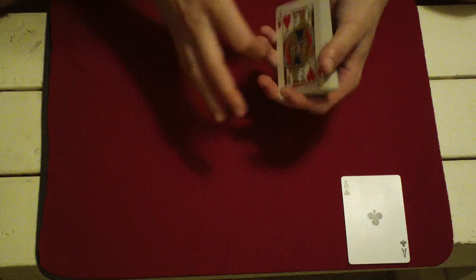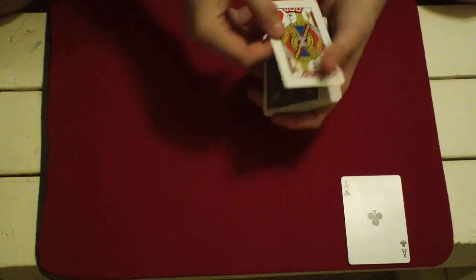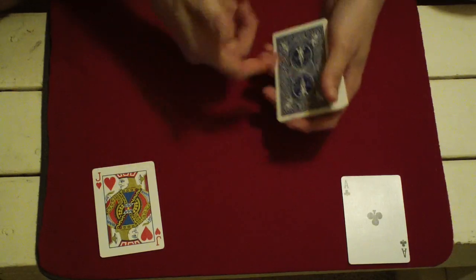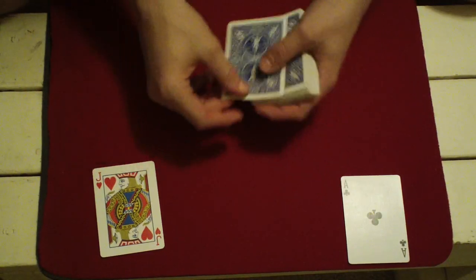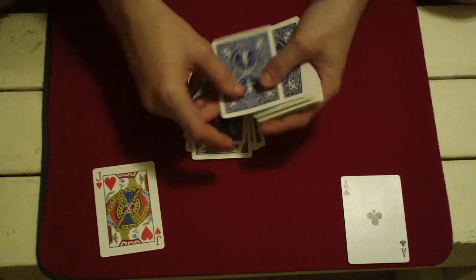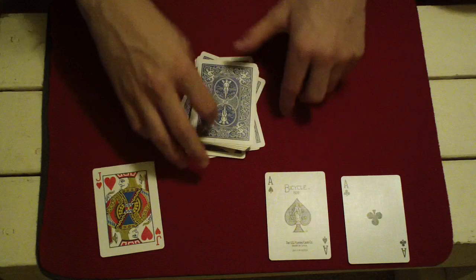They cut to a jack. Now a jack is 11, just as a queen would be 12 or a king would be 13. So let's deal 11 cards and see if we can get the second ace. [Counts 1 through 11] And the 11th card is the second ace.